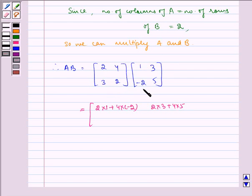Now, second row with first column, so we get 3 into 1 plus 2 into minus 2. Then second row with second column, so we get 3 into 3 plus 2 into 5.